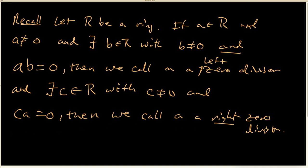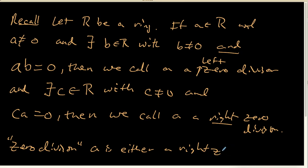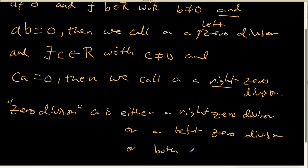The phrase 'zero divisor' means A is either a right zero divisor, a left zero divisor, or both. It doesn't matter if we can only find an element on one side that works, or elements on both sides.